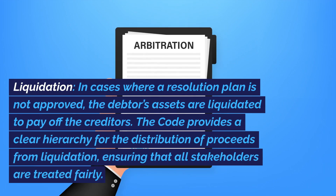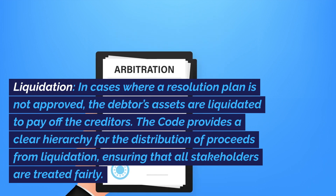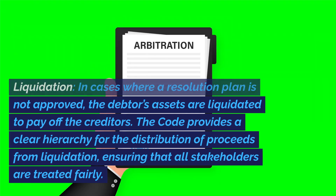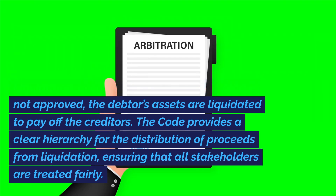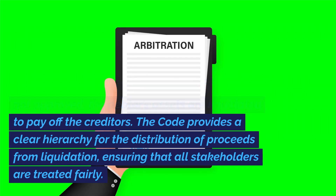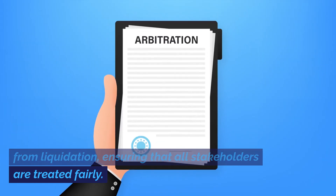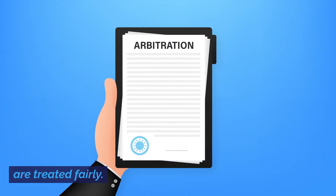In cases where a resolution plan is not approved, the debtor's assets are liquidated to pay off the creditors. The Code provides a clear hierarchy for the distribution of proceeds from liquidation, ensuring that all stakeholders are treated fairly.